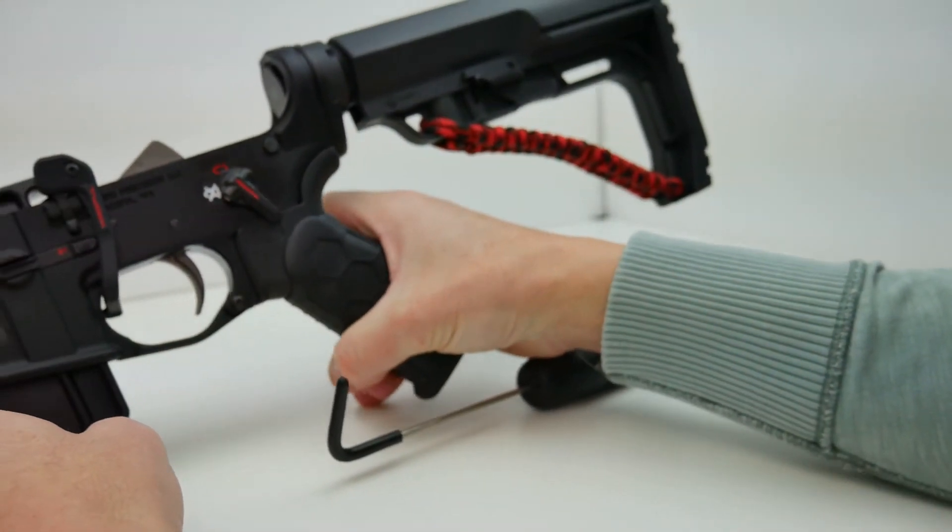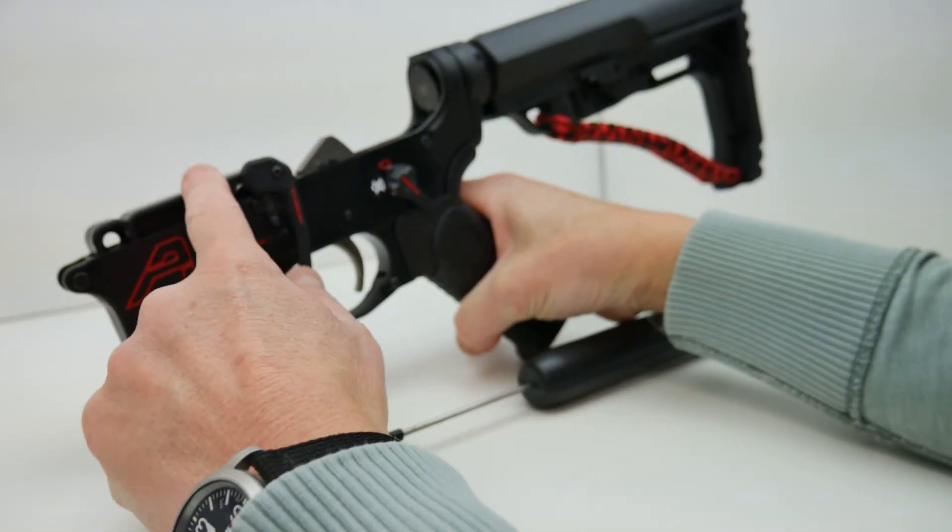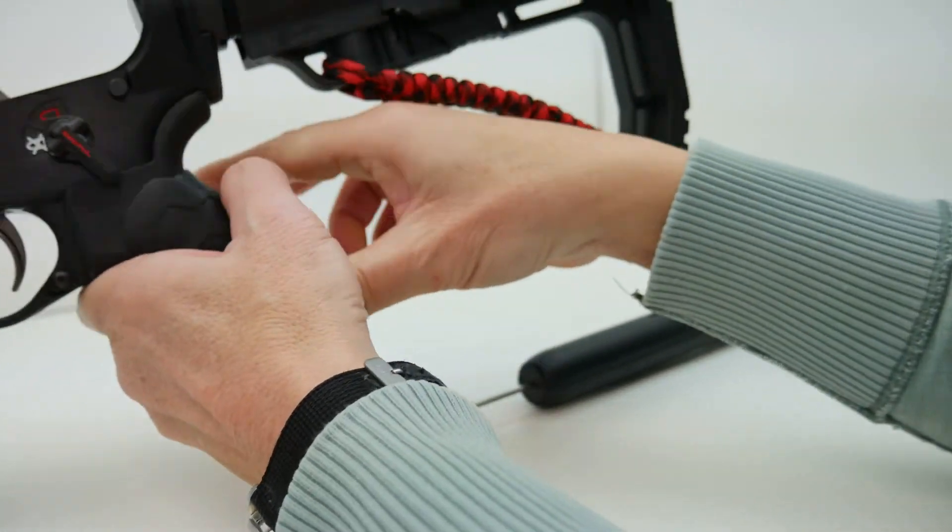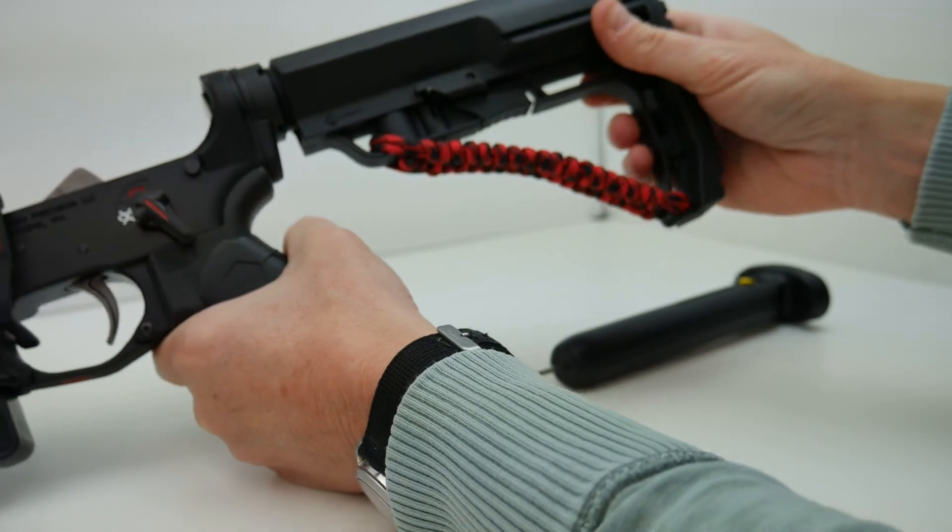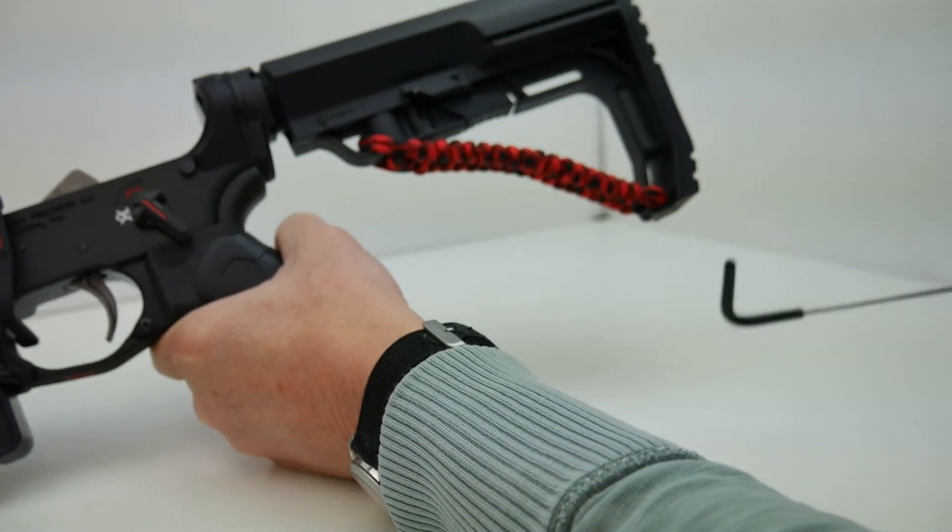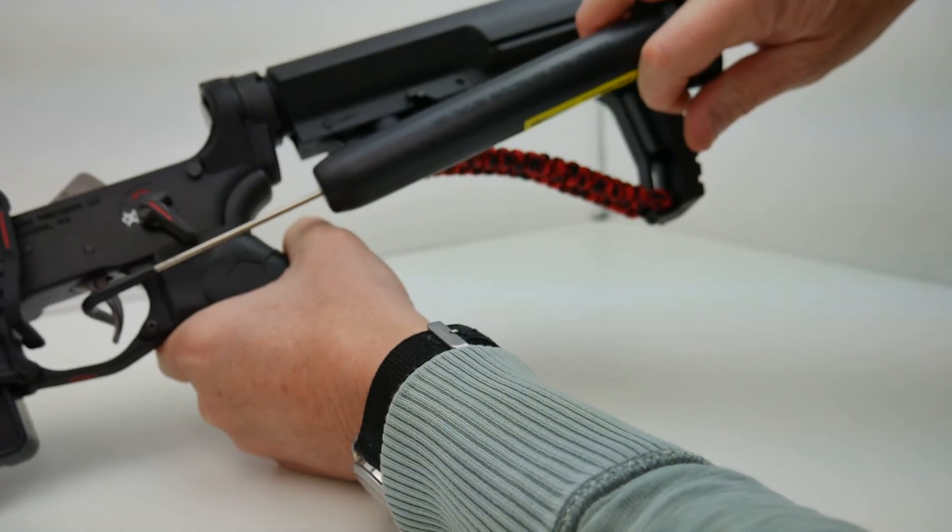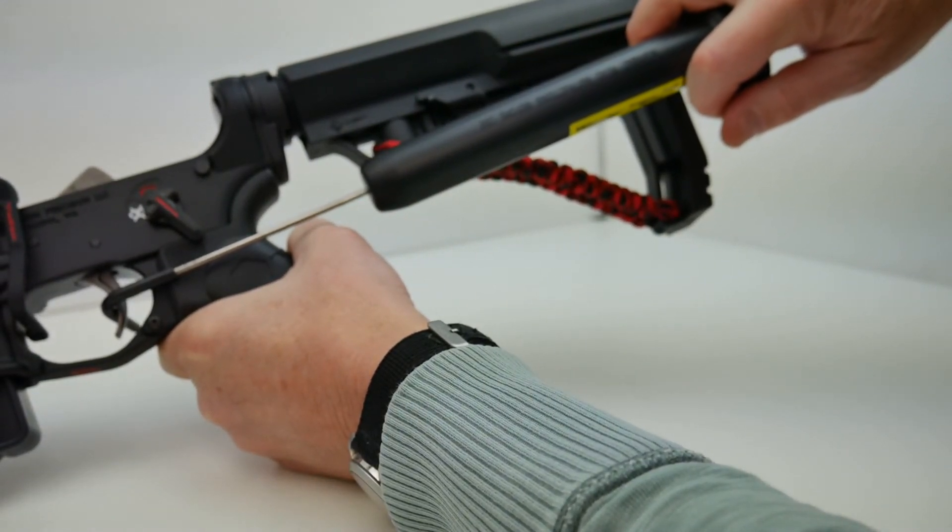I have my lower receiver here. I have a hammer block guard in here so I can drop the hammer without having to worry about it slamming in the lower receiver. Everything is reset.